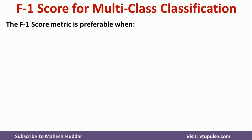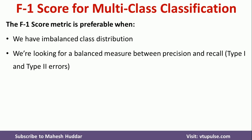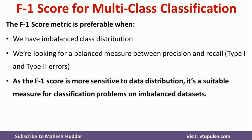F1 score is preferable when we have imbalanced class distribution. For example, if we have 1000 examples where 800 belong to one class and the remaining 200 belong to another class, we have an imbalanced class distribution. In such a case, we cannot use accuracy as a performance metric. We need to use F1 score so that we can judge the machine learning model more accurately. F1 score is preferred whenever we want to get a balanced measure between precision and recall — that is, type 1 and type 2 errors. As F1 score is more sensitive to data distribution, it is a suitable measure for classification problems on imbalanced datasets.